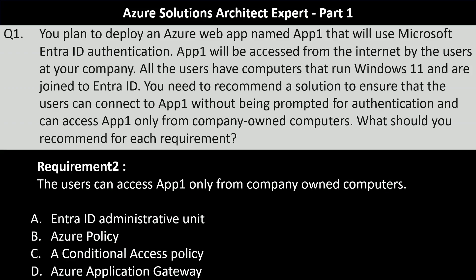The next requirement is that users can access App1 only from company-owned computers. Your options are Entra ID administrative unit, Azure Policy, conditional access policy, or Azure Application Gateway. To ensure users can access App1 only from company-owned computers, you should implement conditional access policies in Entra ID. This way, you can enforce policies that restrict access to App1 to devices that are marked as compliant or joined to Entra ID.